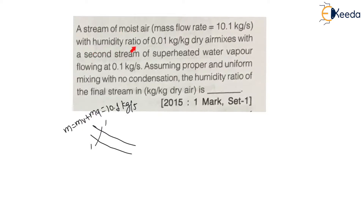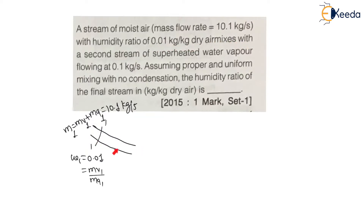Stream 1 has a specific humidity of 0.01 kg per kg of dry air. So omega 1 equals 0.01, which is nothing but mass of vapor 1 divided by mass of dry air 1. The total mass at Stream 1 is m1 = mass of vapor 1 plus mass of air 1.